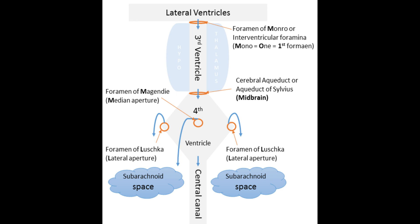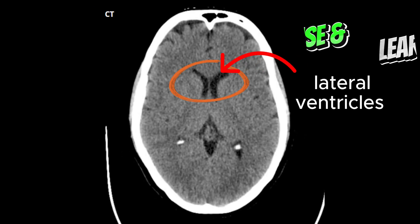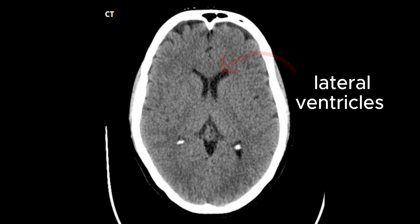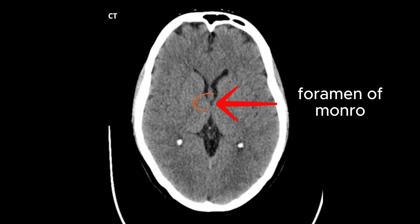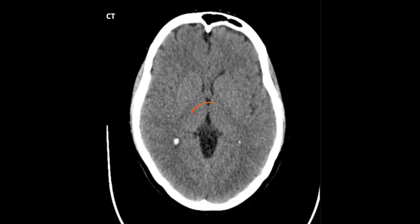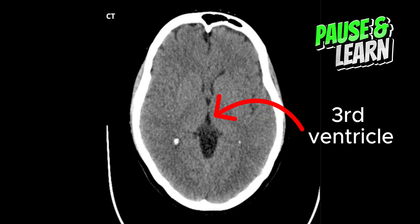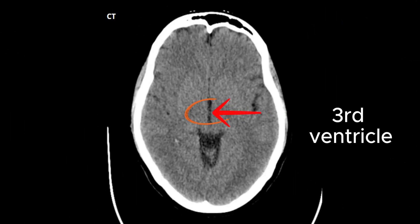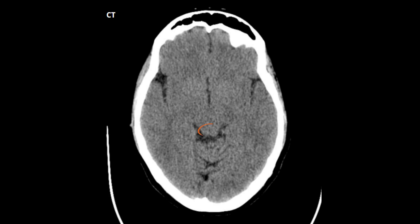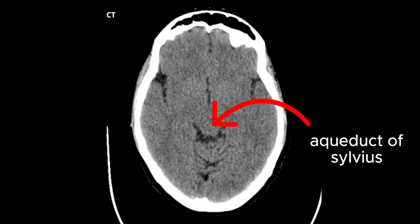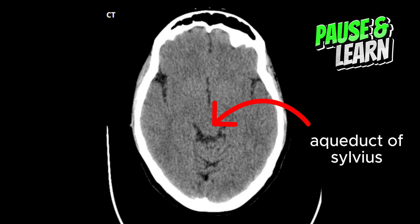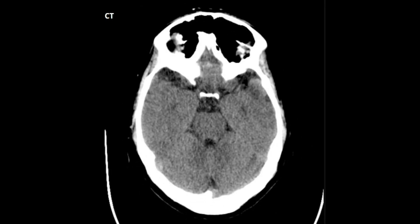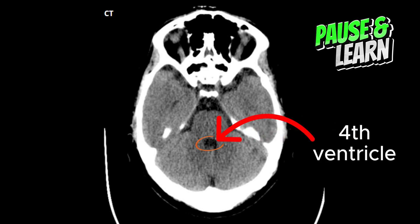Because CSF is a fluid, the ventricles appear dark on a CT film. You can see both lateral ventricles joining with the foramen of Monro as we scroll down, communicating with this slit-like structure which is the third ventricle. The third ventricle communicates with the fourth ventricle via the aqueduct of Sylvius. Here you can see the aqueduct of Sylvius joining the fourth ventricle, which appears a bit triangular shaped.